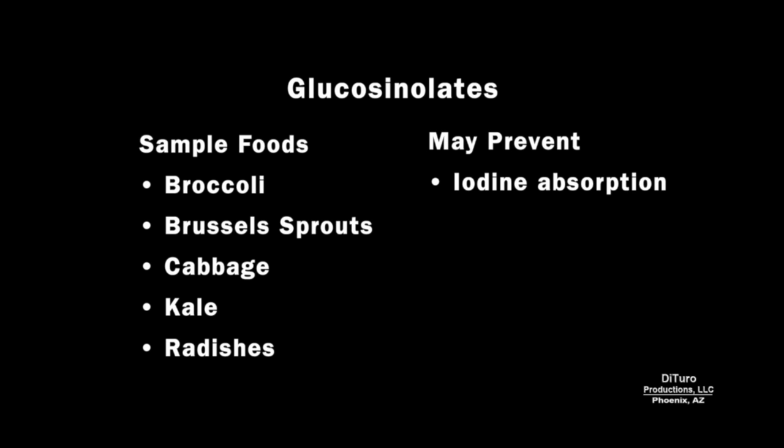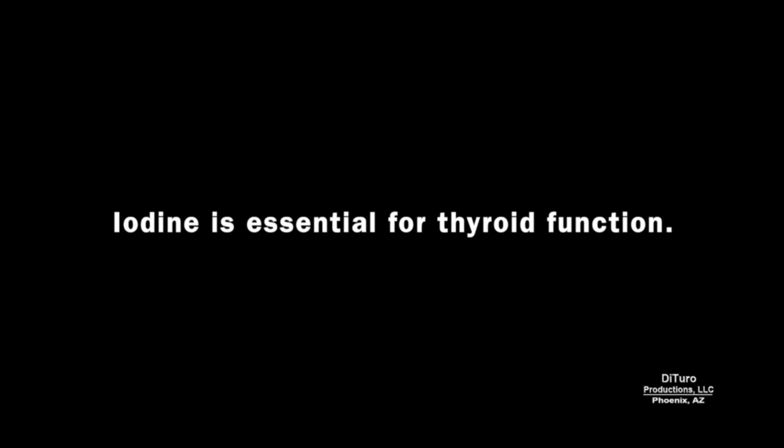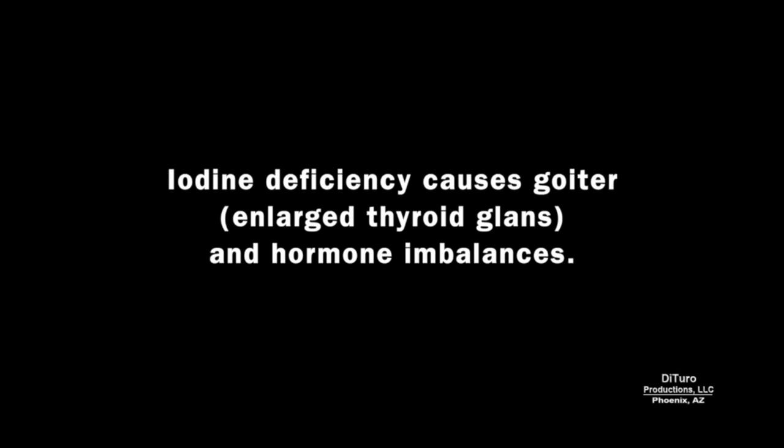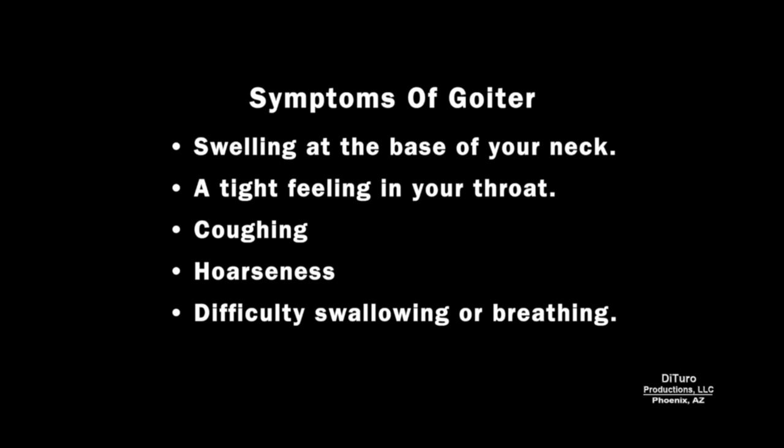Glucosinolates may prevent iodine absorption. They are commonly found in cruciferous vegetables like broccoli and cabbage, leafy greens like kale, and radishes. Iodine is essential for thyroid function. Iodine deficiency causes goiter and hormone imbalances. Some symptoms of goiter are swelling at the base of your neck, a tight feeling in your throat, coughing, hoarseness, and difficulty swallowing or breathing.